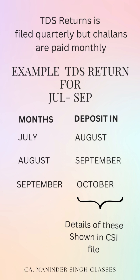Suppose we are filing return for the period July to September. In this case there are 3 months: July, August, and September. July Challan will be paid in August, August Challan in September, and September Challan in October. Details of these Challans are present in the CSI file.